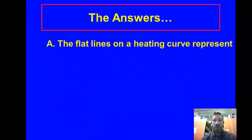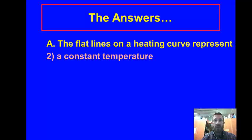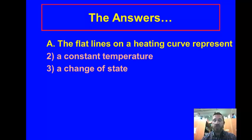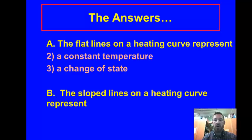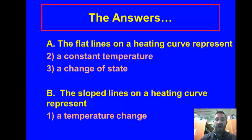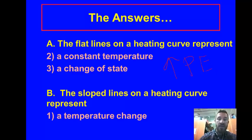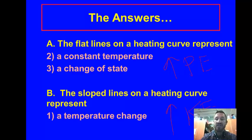So the answers: the flat lines on a heating curve represent a constant temperature — if it's flat, notice temperature is on your y-axis, so temperature is not changing — and also a change of state, where we see melting or fusion, or vaporizing from liquid to gas. The slope lines represent a temperature change. The flat lines represent an increase in potential energy, and the slope lines represent an increase in kinetic energy, because increasing kinetic energy corresponds to an increase in temperature.